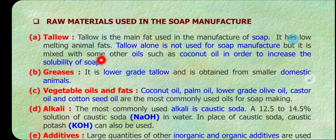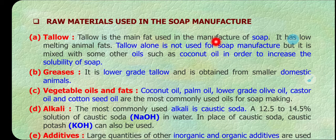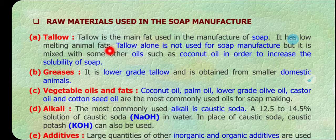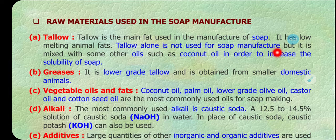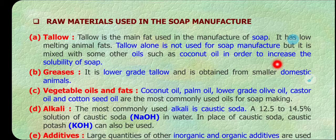First is tallow, which is the main fat used in the manufacture of soap. It is a low-melting animal fat. Tallow alone is not used for soap manufacture but is mixed with other oils such as coconut oil in order to increase the solubility of the soap.